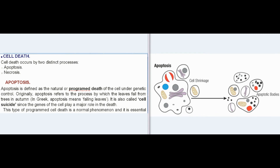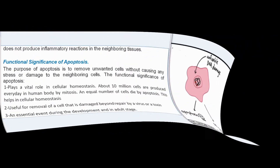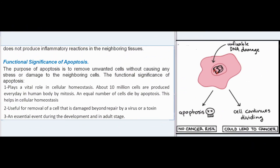Cell death occurs by two distinct processes: apoptosis and necrosis. Apoptosis is defined as the natural or programmed death of the cell under genetic control. Originally, apoptosis refers to the process by which leaves fall from trees in autumn — in Greek, apoptosis means 'falling leaves.' It is also called cell suicide since the genes of the cell play a major role. In contrast to necrosis, apoptosis usually does not produce inflammatory reactions in neighboring tissues.